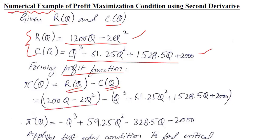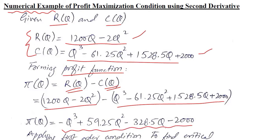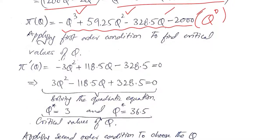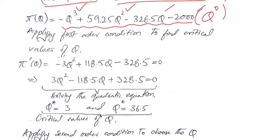This is the revenue function minus the cost function. We can do a simple step of algebra by rearranging and merging these values, writing them in a way where the highest power comes first, then the second highest, third highest, and q raised to the power 0. Writing them in an orderly way, we are now in a position to apply the first order condition on this profit function that we have just developed.